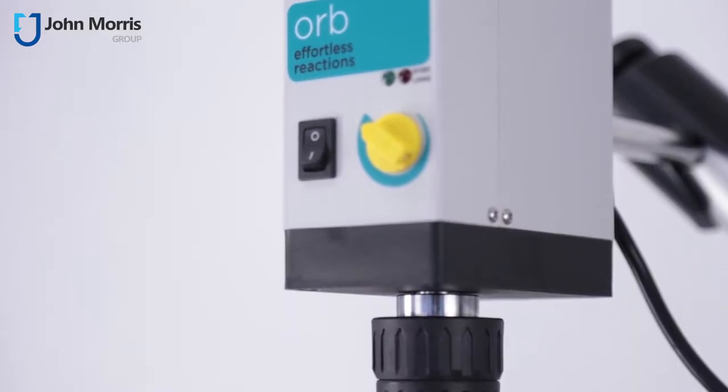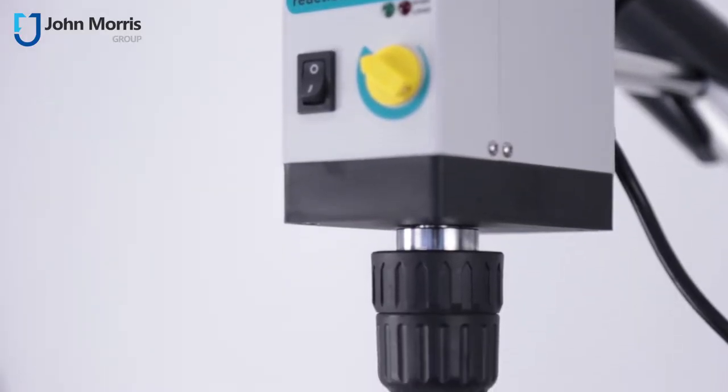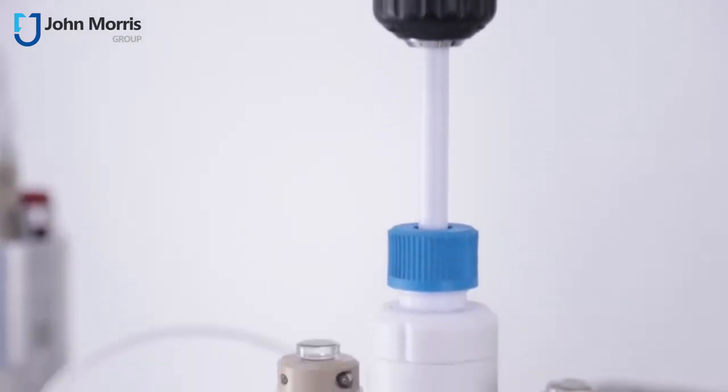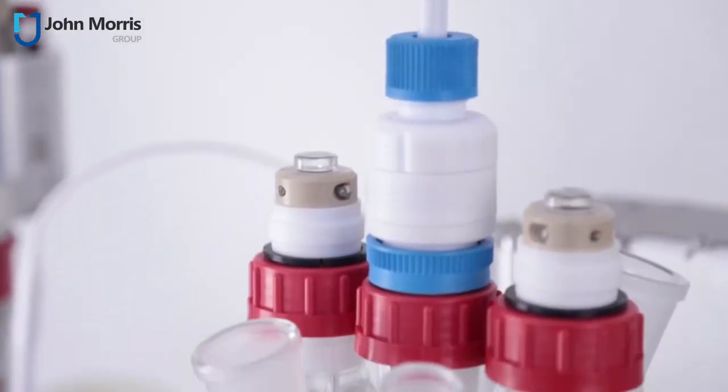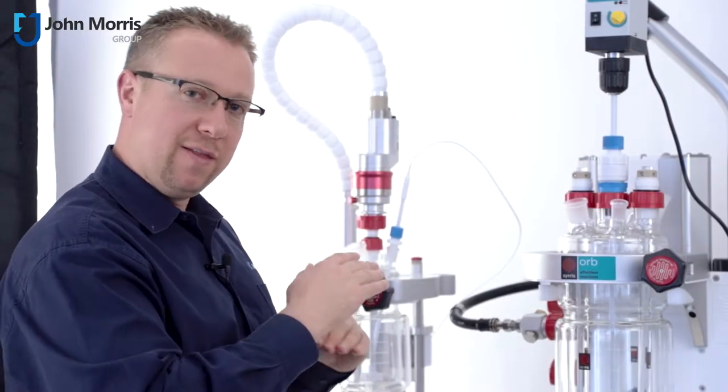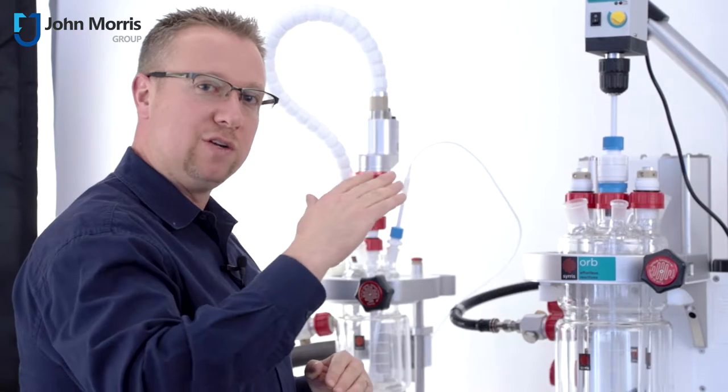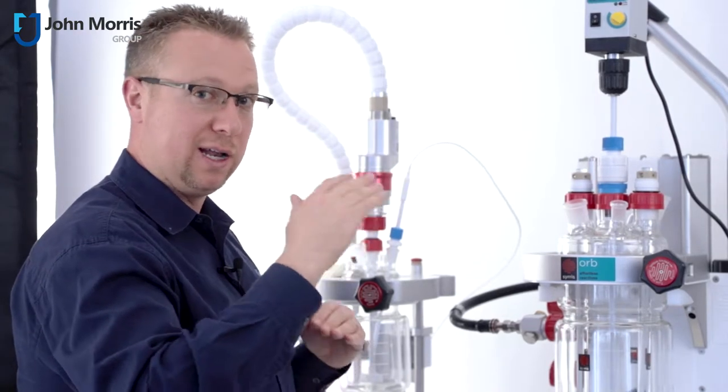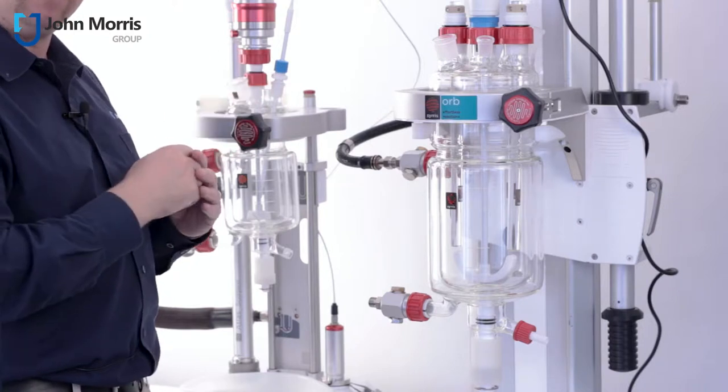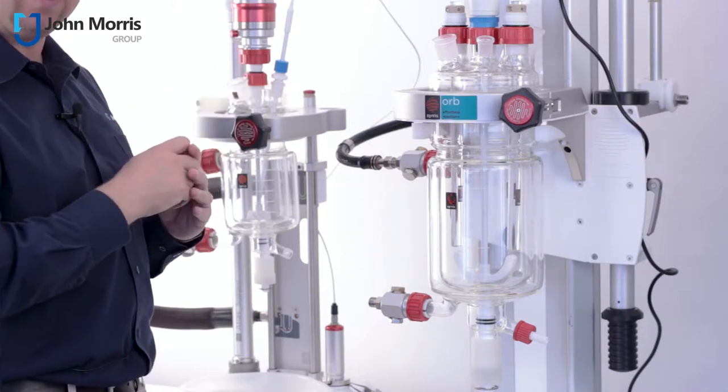Not only does the Orb allow you to do just about everything you need to do without the requirement for any tools, you can make all of the changes with your hands, but it also has one dramatic advantage over the Atlas HD and that is it enables you to go to a much larger volume range right up to 10 liters. Let's have a closer look at the Orb now so that I can show you some of its unique features and benefits over other brands on the market.